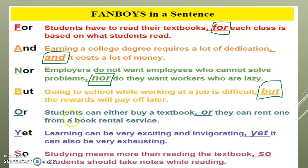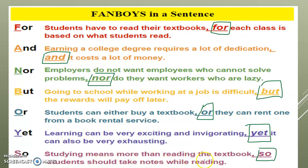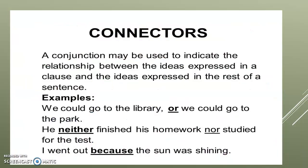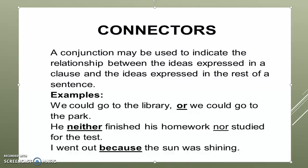Or: 'Students can either buy a textbook or they can rent one from a book rental service' — 'or' is the connector joining the two options. Yet: 'Learning can be very exciting and invigorating, yet it can also be very exhausting' — 'yet' connects the two parts. So: 'Studying means more than reading the textbook, so students should take notice while reading' — 'so' works as a connector. The conjunction indicates the relationship between the ideas expressed in the clauses.